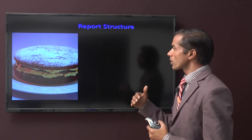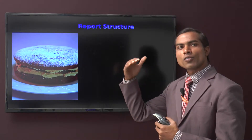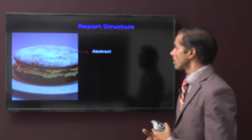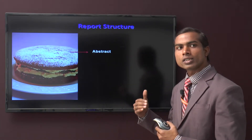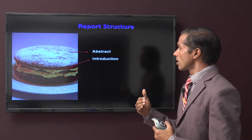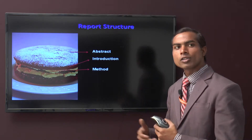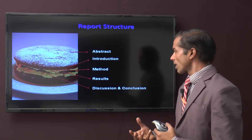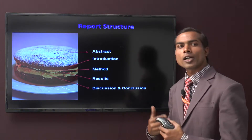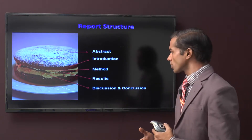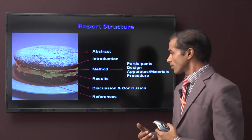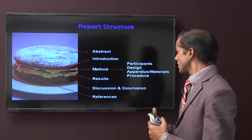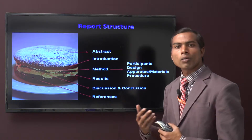Now let us look at the report structure. Report structure has different layers — we can compare it to a hamburger. A report structure starts with an abstract, introduction, the method used for doing research, the result of the research, and discussion or conclusion of your research project, and the references. The method section can include participants, design, apparatus, or procedure.